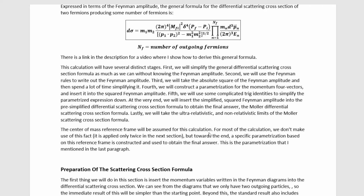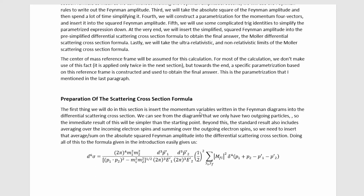The center of mass frame will be assumed for this calculation. For most of the calculation we don't make use of this fact — it is applied only twice before we get to the parameterization at the end. The first thing we do is insert the momentum variables from the Feynman diagrams into the differential scattering cross-section. We only have two outgoing particles, so the result will be simpler. The standard result also includes averaging over incoming electron spins and summing over outgoing electron spins, so we insert such averages and sums on the absolute squared Feynman amplitude.